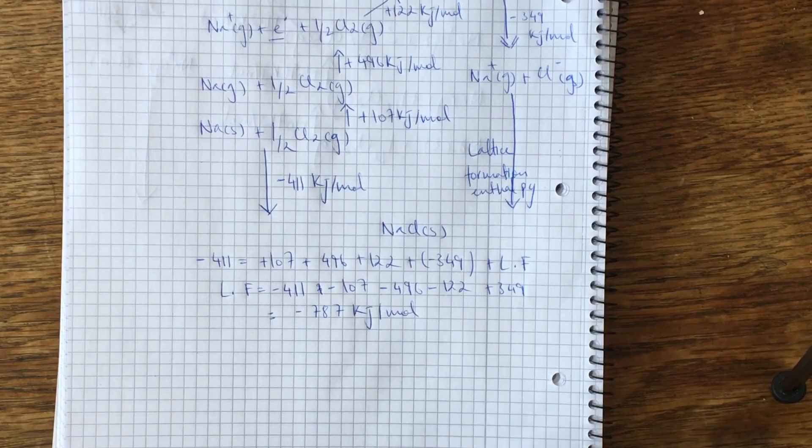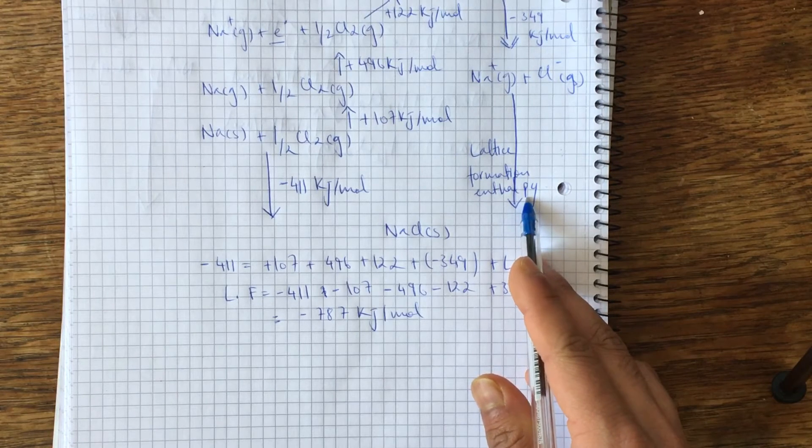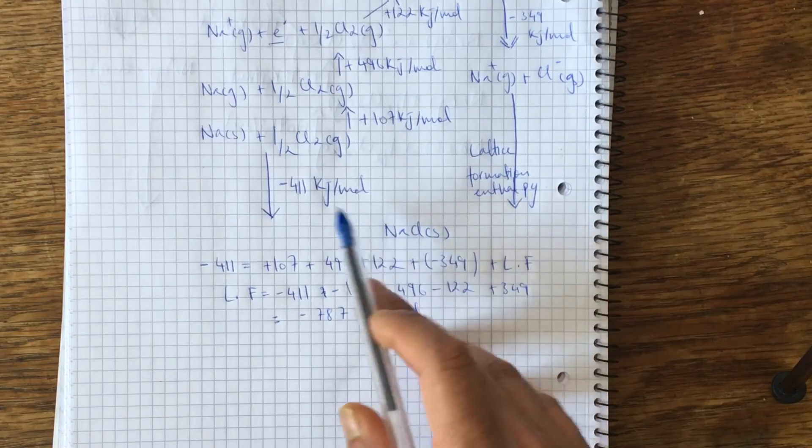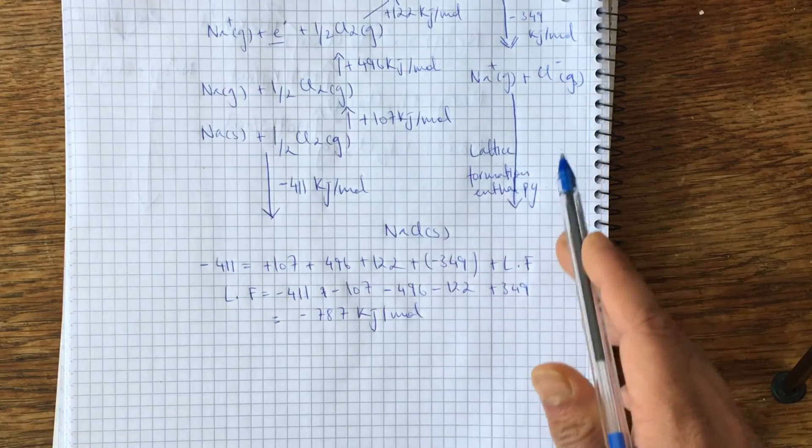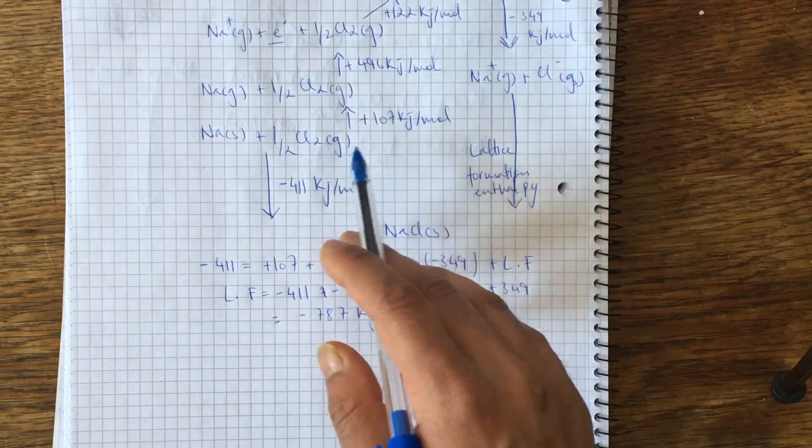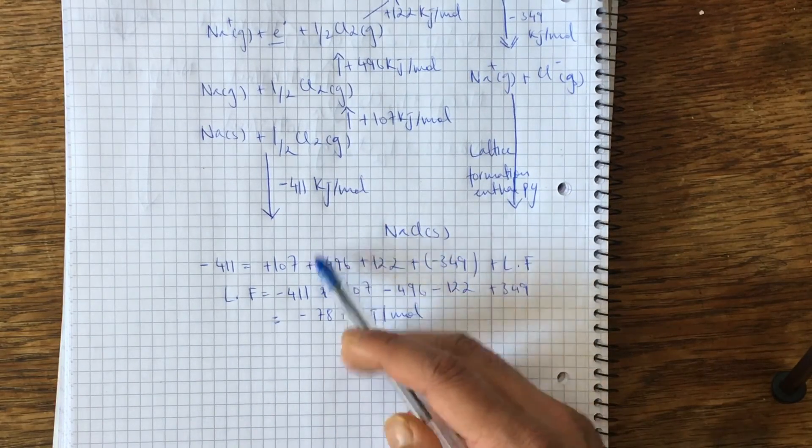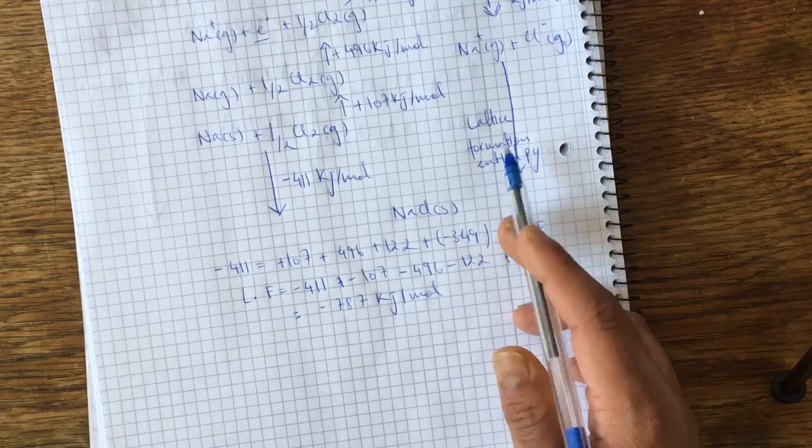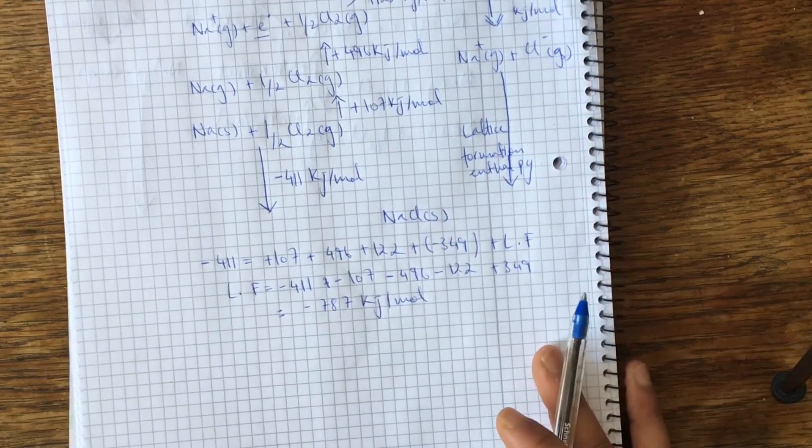So basically, this here is the lattice formation enthalpy, which is also included in the enthalpy change of formation. And it's kind of easier to find it out using the Bornhaber cycle because we break down each singular process. For example, the ionization energies and the electron affinity, so it's kind of easier to notice where exactly it lies and just basically have to rearrange the equation.